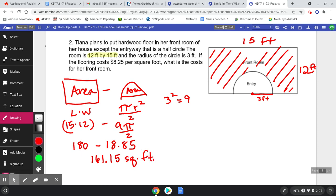Remember that area is squared - square feet. So that's my area, but we want to go buy flooring for this. So 161.15 times the eight and a quarter per square foot.